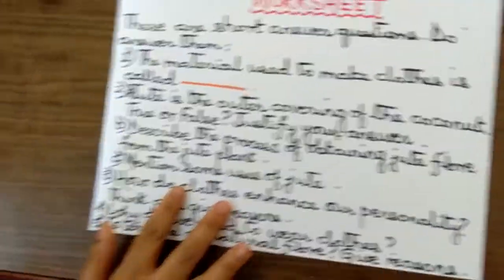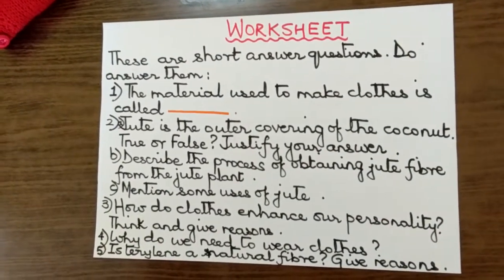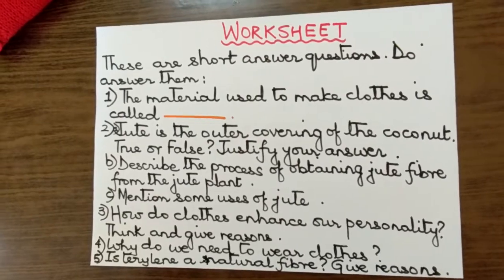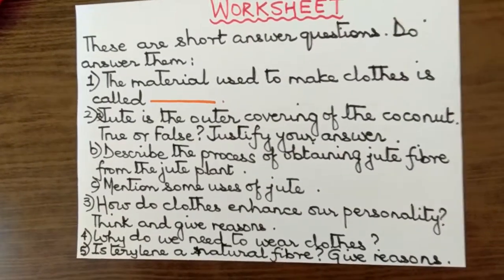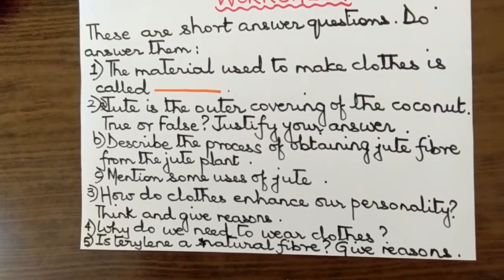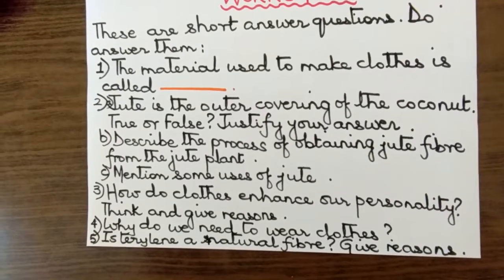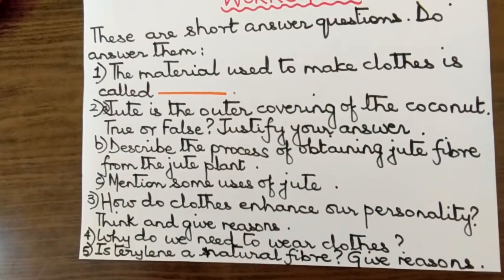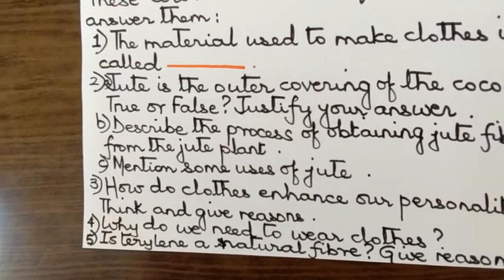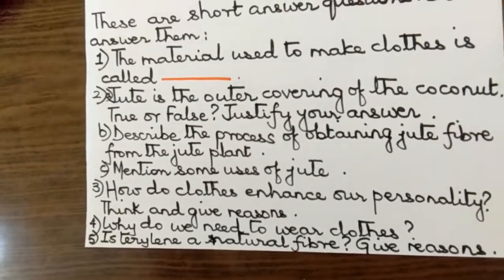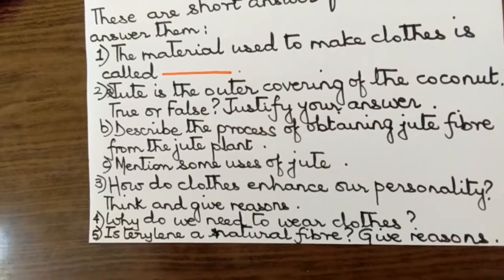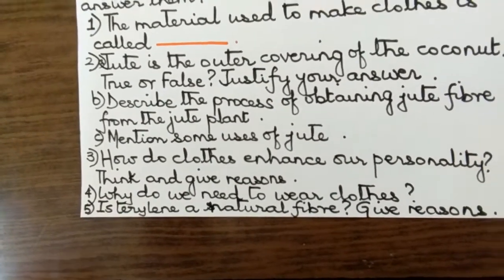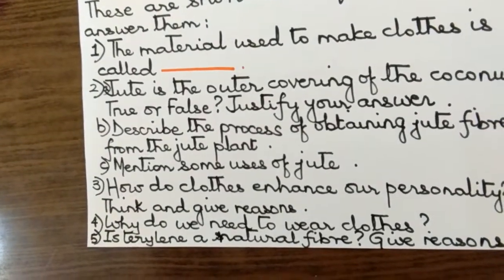There is a worksheet for you with short answer questions. Number one: the material used to make clothes is called ___. Number two part A: jute is the outer covering of the coconut — true or false, give reasons. Part B: describe the process of obtaining jute fiber from the jute plant. Part C: mention some uses of jute. How do clothes enhance our personality? Question three: think and give reasons. Question four: why do we need to wear clothes? Question five: is terrylene a natural fiber — give reasons.